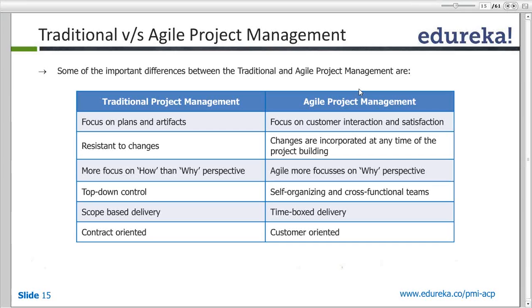In waterfall, it's broken into distinct boundaries between the teams. In Agile, it's more of a boundaryless team. Of course there might be some differences of opinion, but at the end of the day everybody would be a part of the same team — there's no distinct boundary between the teams.